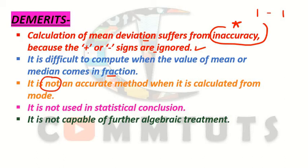The third demerit is that it is not an accurate method when it is calculated from mode. Mean deviation can be calculated from mean, median, or mode. But when it is calculated from mode, it is not considered accurate, because in the case of mode — which represents the most frequent value — the deviations may be inaccurate and we ignore the plus or minus signs, so it does not always provide accurate results.